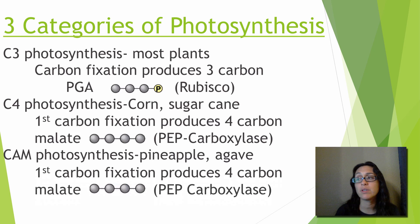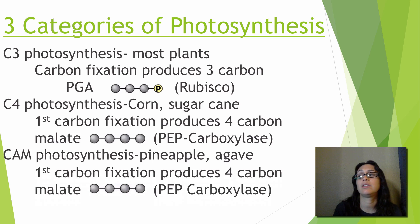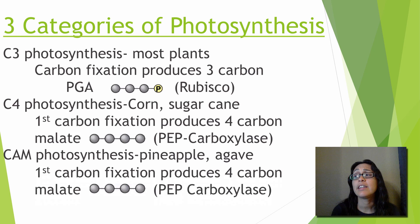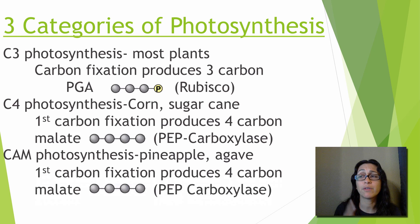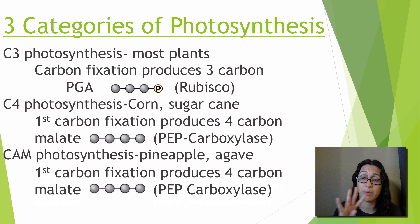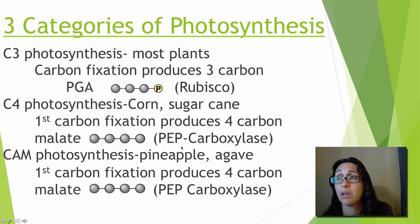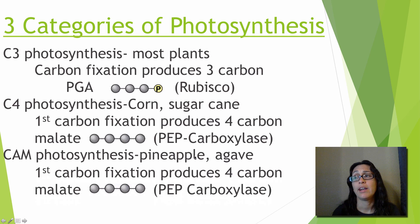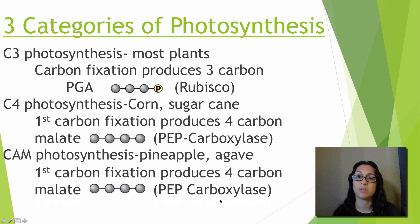CAM photosynthesis occurs in plants such as pineapple, agave, and other cacti. Here there are also two times that carbon gets fixed into molecules. The first fixation produces four-carbon malate — same as in C4 — and still uses PEP carboxylase, but there will be a slight difference we'll look at more closely.